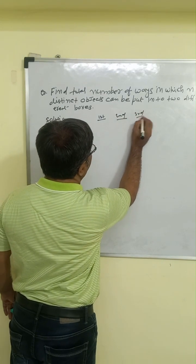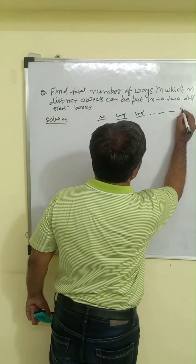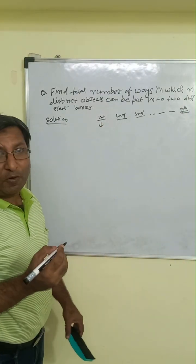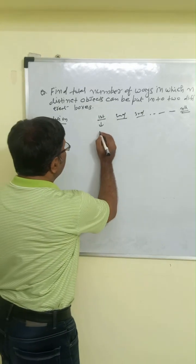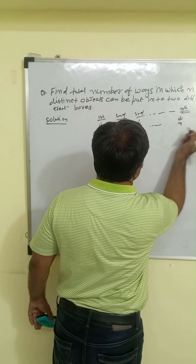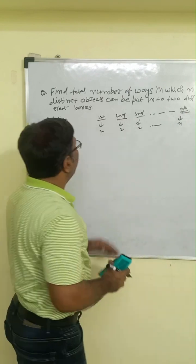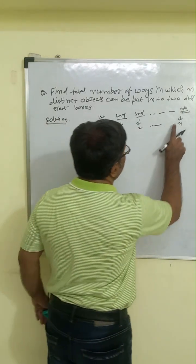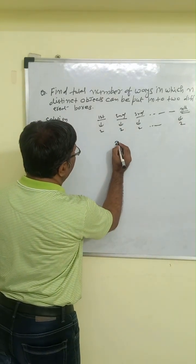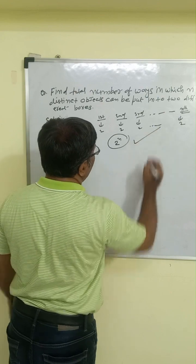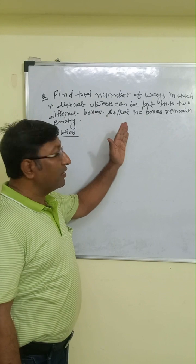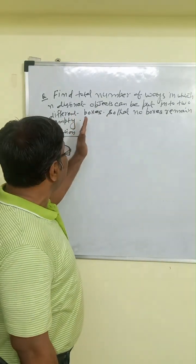Suppose we have the first object, second object, third object, and so on up to the nth object. The first object can be put into two boxes, so it has two choices. Every object has two ways, so the total number of ways is two to the power n. That is the right answer.